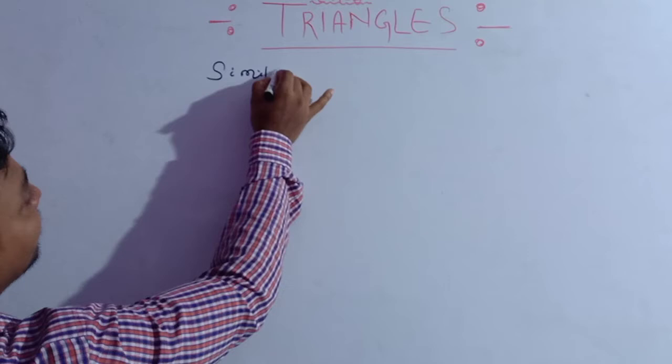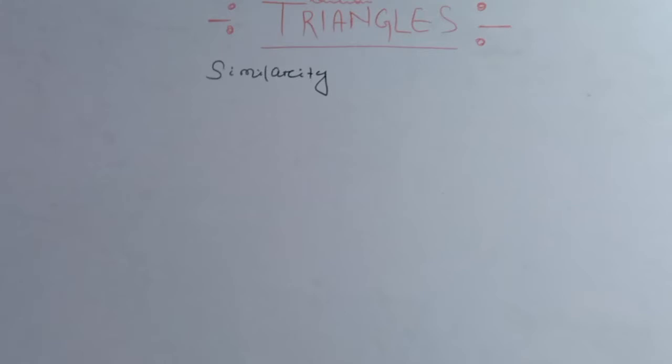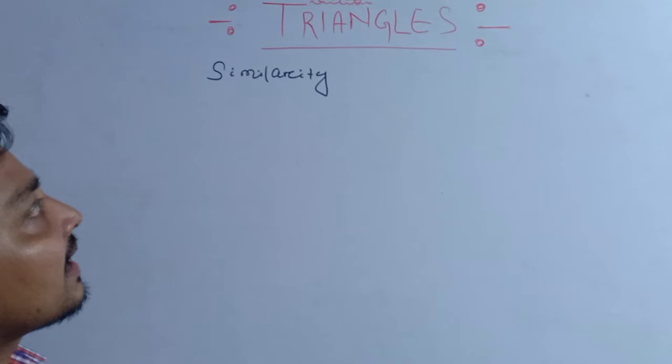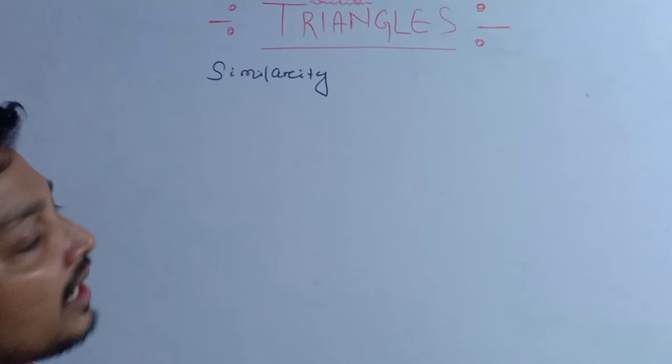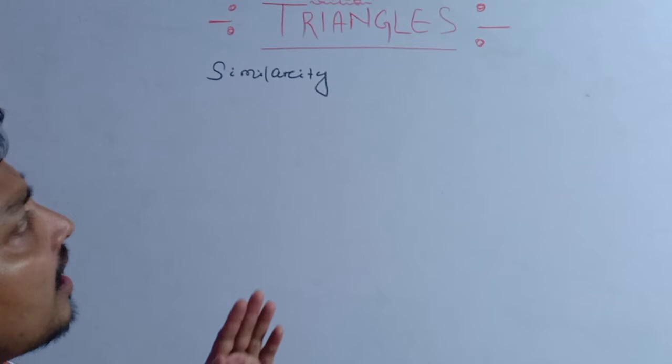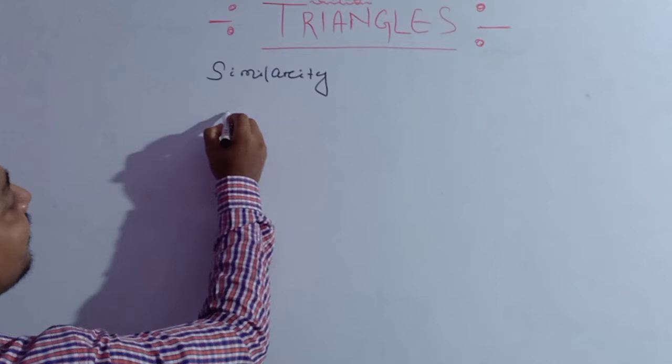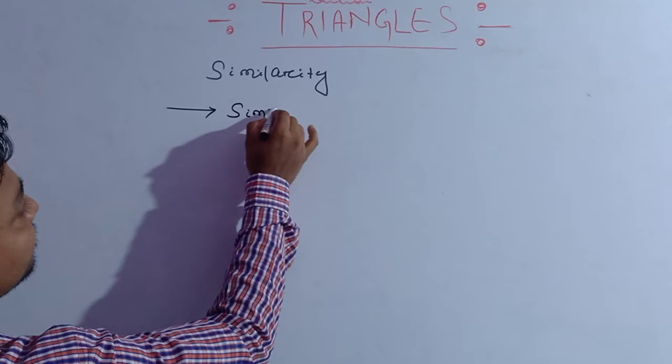Just like two triangles — we have already learned that two triangles are congruent. So in our class we have to give emphasis to learning about the similarity of two triangles. But before learning about the similarity of two triangles, first we will learn about how we can say that two figures are similar — the similarity of two figures.